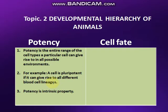Kitni tarah ki lineages hoti hain - aur yeh saari lineages sirf ek cell se produce ho rahi hain. Toh is ek cell ke andar kya hai? Yeh saari blood cell lineages ko produce karne ki potency hai. Potency is an intrinsic property - intrinsic matlab andarooni. Potency jo hai, woh kisi bhi cell ki andarooni salahiyat hoti hai, uske andar ki property hoti hai - yeh koi externally us pe nahi aati.